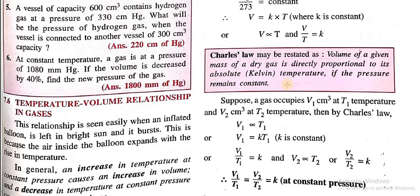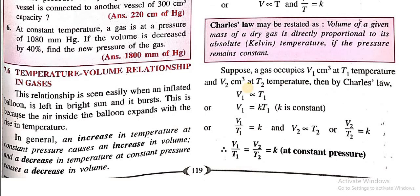Now, let us derive the expression that we need for the numerical. Suppose a gas occupies V₁ cm³ at T₁ temperature and V₂ cm³ at temperature T₂. Then by Charles's Law, we can write V₁ directly proportional to T₁. We'll put constant k, V₁ equals kT₁, where k is constant.